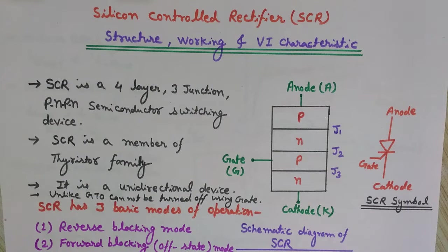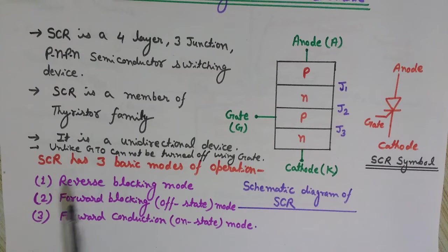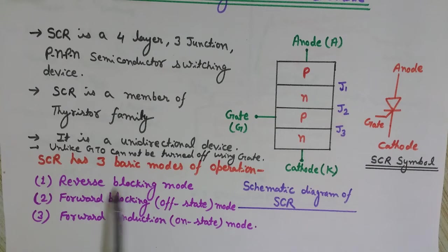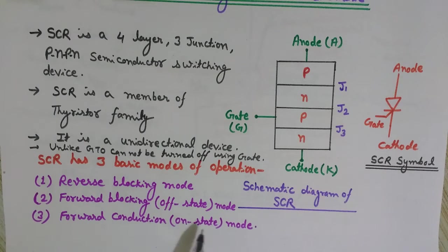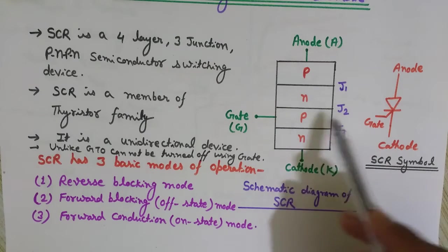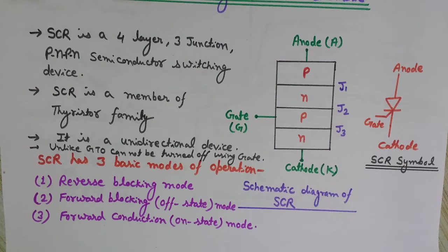SCR is a unidirectional device. It has three basic modes of operation: the first is the reverse blocking mode; the second is the forward blocking mode, which is the off state; and the third is the forward conduction mode, which is the on state. We will discuss all three modes along with the VI characteristic.